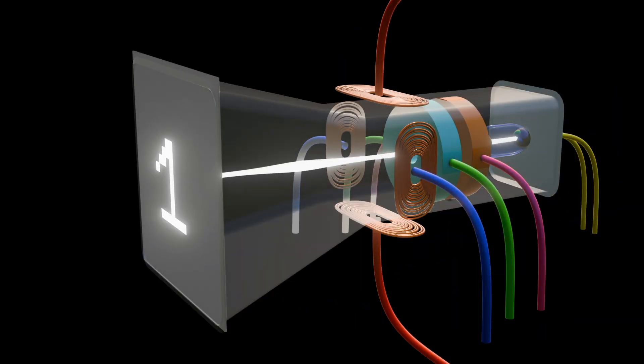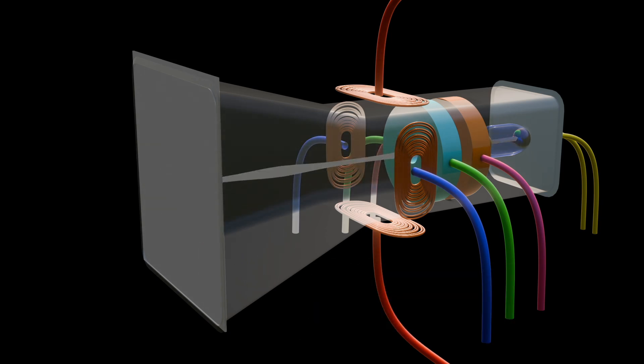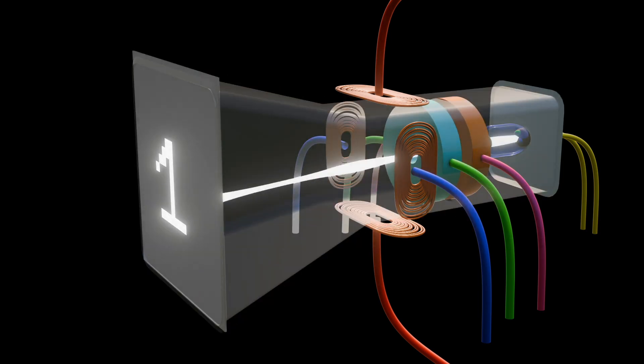Then the screen is phosphor coated. To produce an image on the screen, complex signals are applied to the deflecting coils. This causes the spot to race across the screen from right to left and top to bottom in a raster sequence.